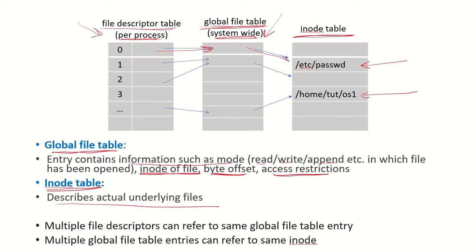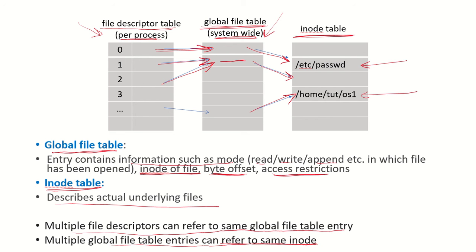The file descriptor tables and global file tables all have pointers to the locations of the actual files. Multiple file descriptors can refer to the same global file table entry — for example, standard output and standard error may point to the same entry. Similarly, multiple global file table entries can refer to the same inode, since a particular file may be opened by different processes. We will discuss inodes in more detail in later lectures.